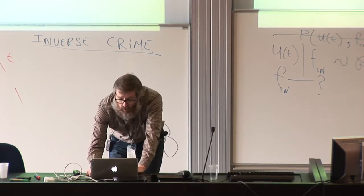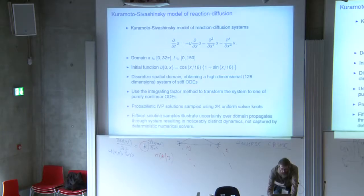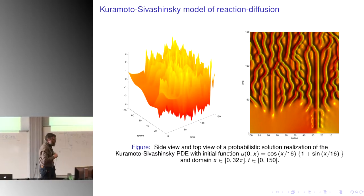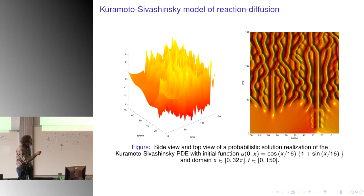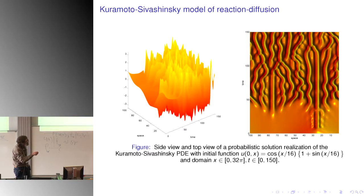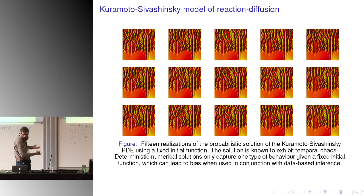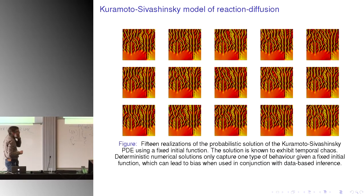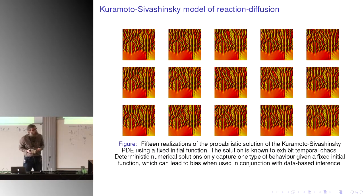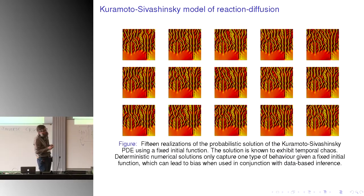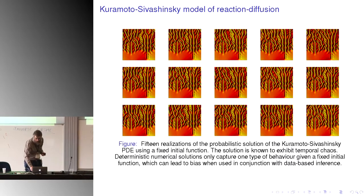One other example of a chaotic system — this is a partial differential equation sometimes used to model flame fronts, defined in one dimension over time. You could imagine creating a movie of this representing the generation of flames. Here are 15 samples from the posterior. You can definitely see the variability associated with the overall process.